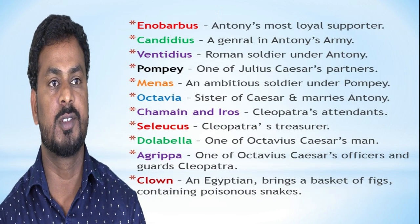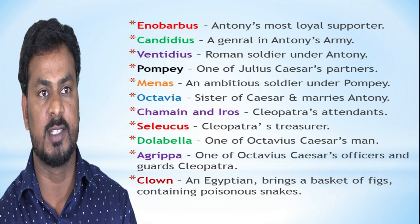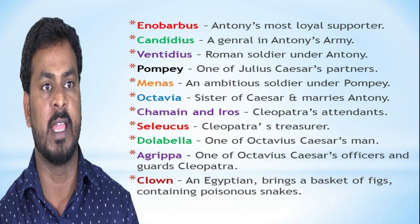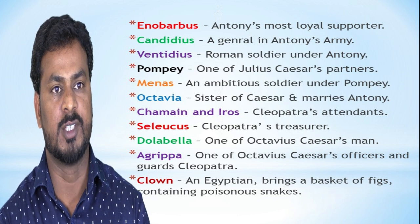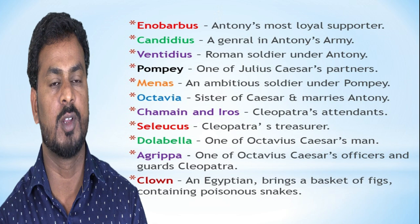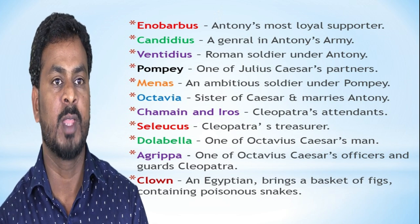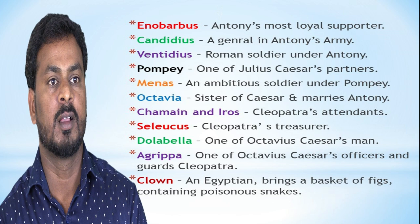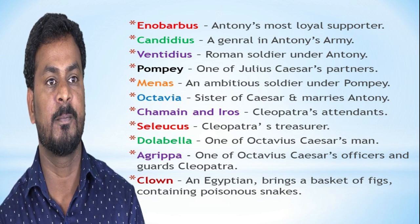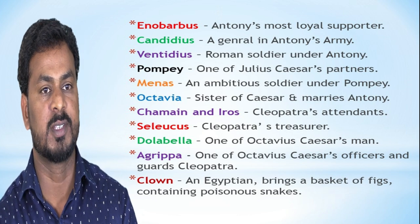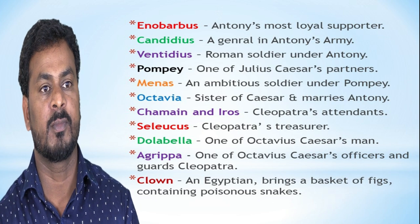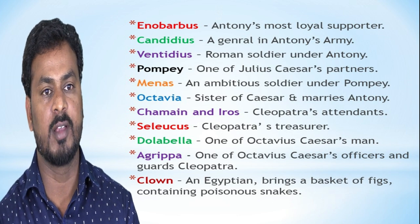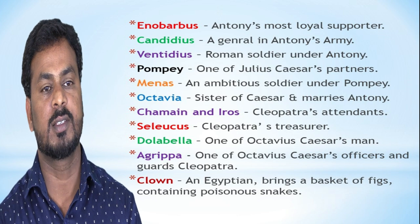Now let us see the other characters. Enobarbus is Antony's most loyal supporter. He always defended Antony, but later he does betray Antony. Canidius is a general in Antony's army. Ventidius is a Roman soldier under Antony's command. Pompey — he is one of Julius Caesar's former partners and wants to capture Rome. Menas is one of Pompey's men. And Octavia is an emblem of a good woman. Charmian and Iras are Cleopatra's attendants.